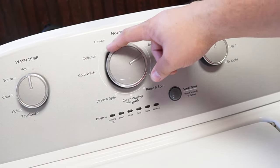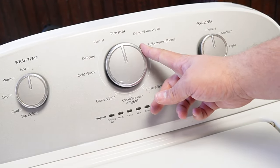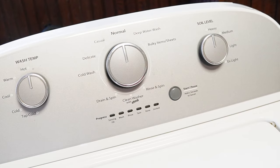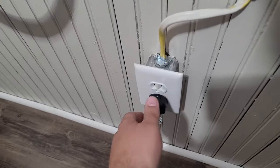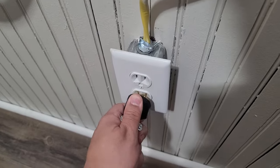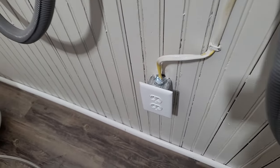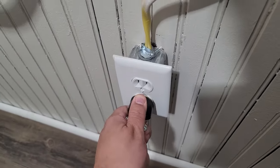First, rotate your washer's control dial counterclockwise until it's at the north or 12 o'clock position. Once that's done, unplug the washing machine from the wall, and with the unit unplugged, wait about a minute before you plug the power cord back in.